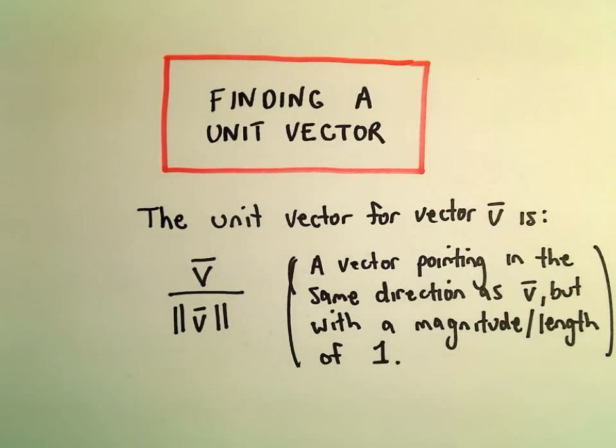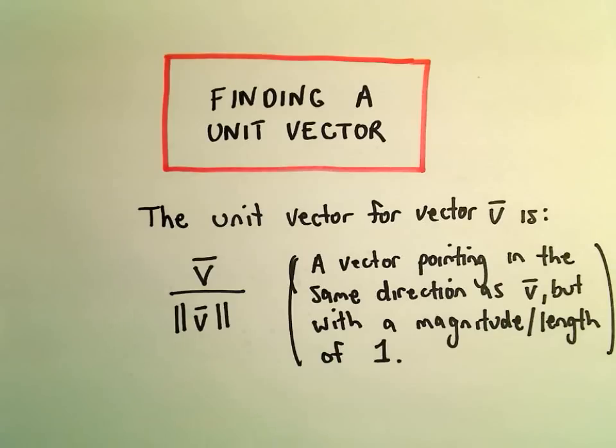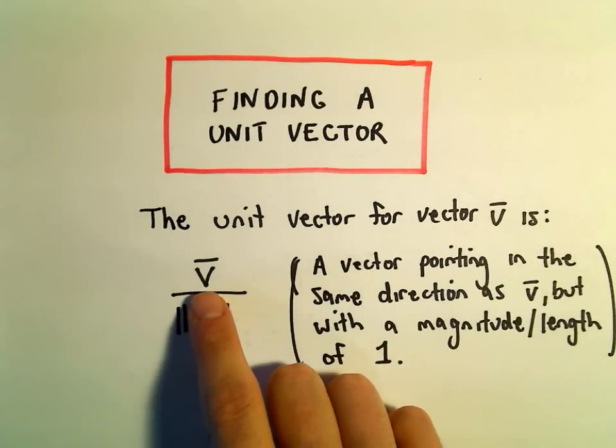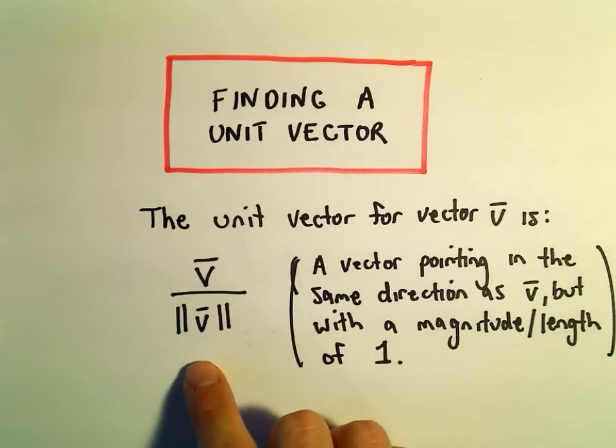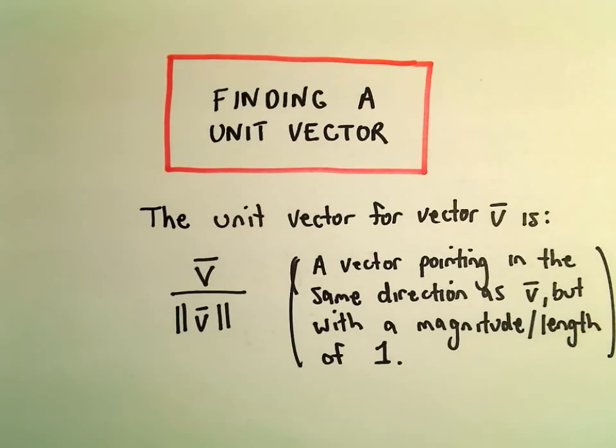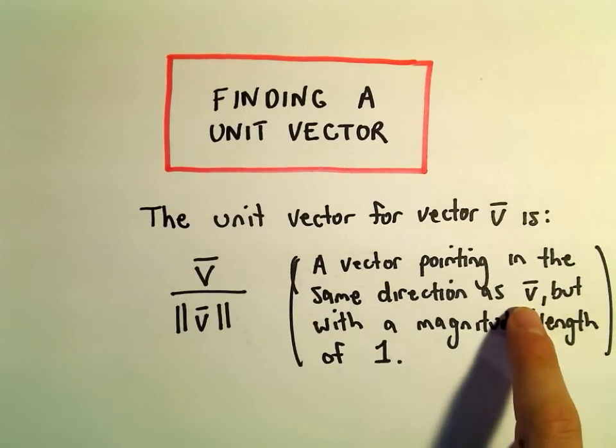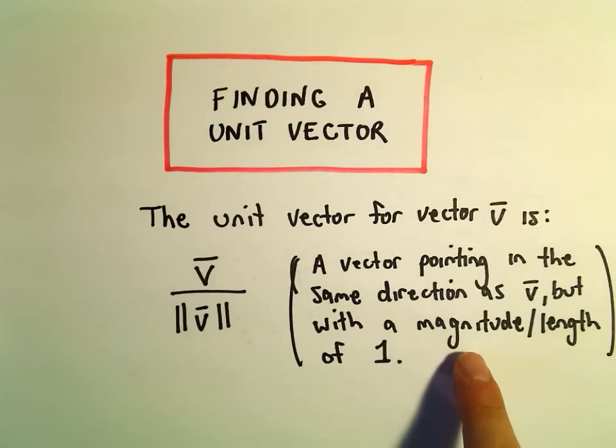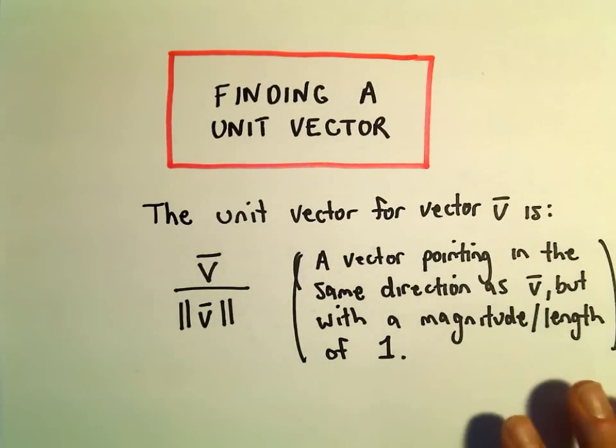In this video we're going to talk about finding a unit vector. The unit vector for a vector v is found by taking our vector v and dividing it by its magnitude or length. A unit vector is simply a vector that points in the same direction as the original vector, but with a magnitude or length of 1.